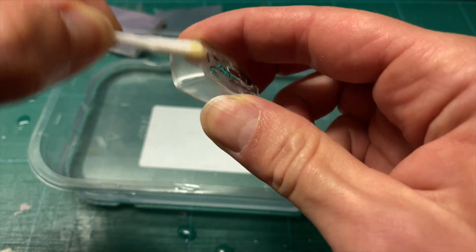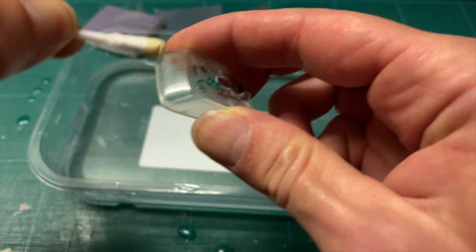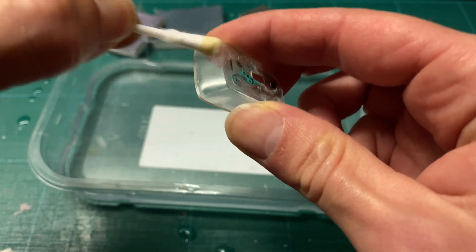Don't use a dremel tool for this as the friction of the tool may cause too much heat which will melt the window unit.